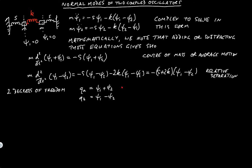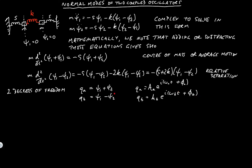Using the standard solution for simple harmonic oscillators, Qa = Aa e^(i omega_A t + phi_A) and Qb = Ab e^(i omega_B t + phi_B). So we have two simple harmonic motions, and we can recover the motions of the individual oscillators by adding or subtracting Qa and Qb: psi 1 equals a half of (Qa + Qb), and psi 2 equals a half of (Qa minus Qb).